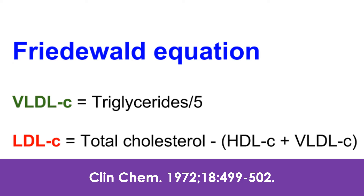The formula published by Friedwald and Associates in 1972 was validated by Warnick and colleagues in 1990. VLDL cholesterol is equal to triglycerides divided by 5. LDL cholesterol is equal to total cholesterol minus the sum of HDL cholesterol and VLDL cholesterol.